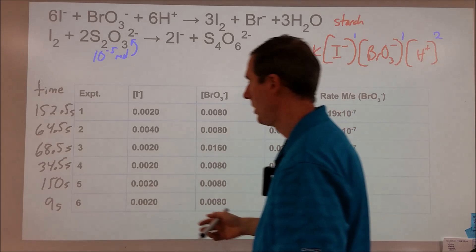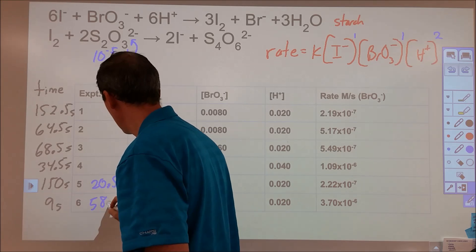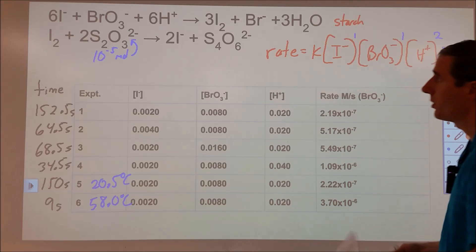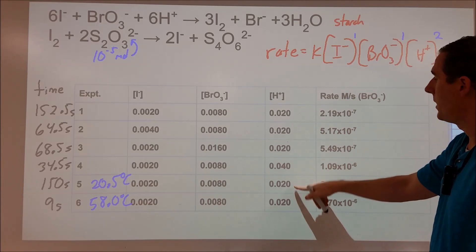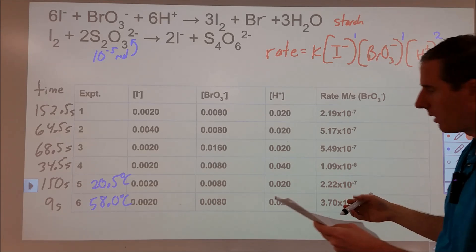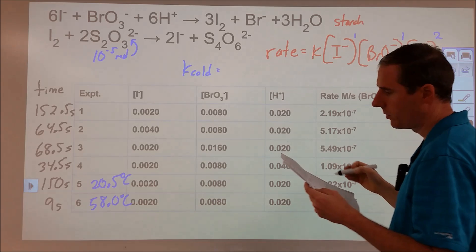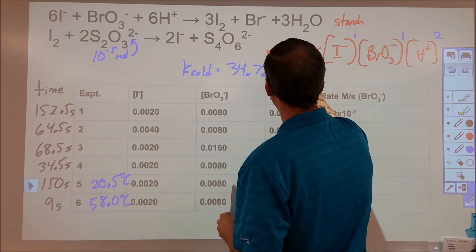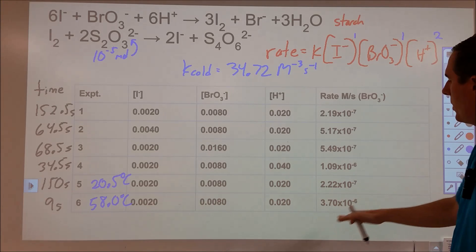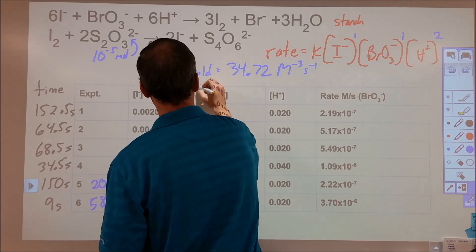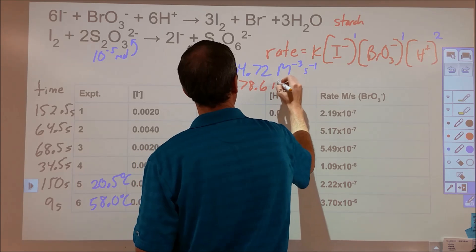Now, the second experiment is when we're doing this at different temperatures. So this was 20.5 degrees Celsius, if my memory serves me correctly. And this was 58 degrees Celsius. So now we can actually use this rate law to figure out what the rate constant is for these two experiments. So when we plug in the rate here and the H-plus concentration, the bromate, and the iodide, and we solve for K, we get a cold rate constant that is equal to 34.72, and its units are molarity to the minus 3 seconds to the minus 1. When we plug in this one, all of the concentrations are the same, but now the rate is different. So we get a different rate constant, and that turns out to be 578.6 in the same units.